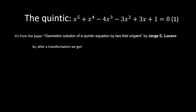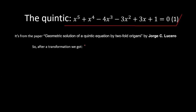After the transformation of equation 1, this equation must be passed through the transformation to get: K to the power 5 minus 110K to the power 3 minus 55K to the power 2 plus 23110K plus 979 equals zero. This is equation 2.